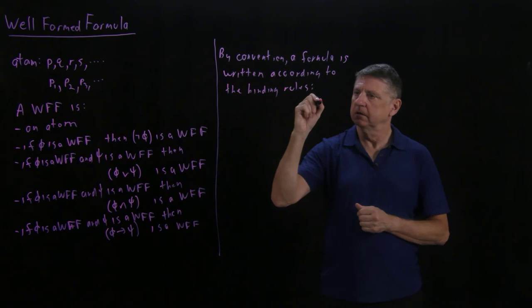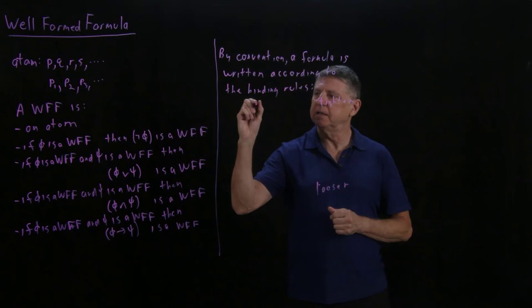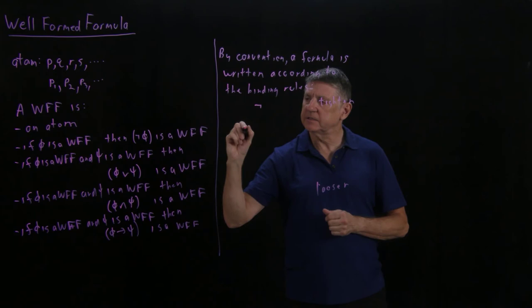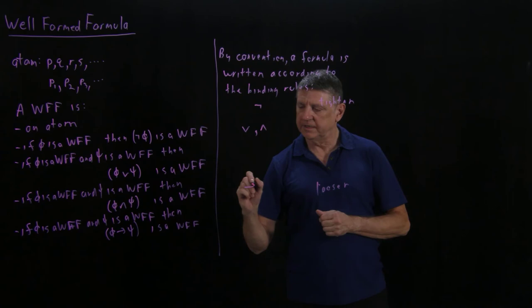And the tightest binding is the negation operator. And the next ones which are equivalent in order are disjunction and conjunction. And the loosest of all is implication.